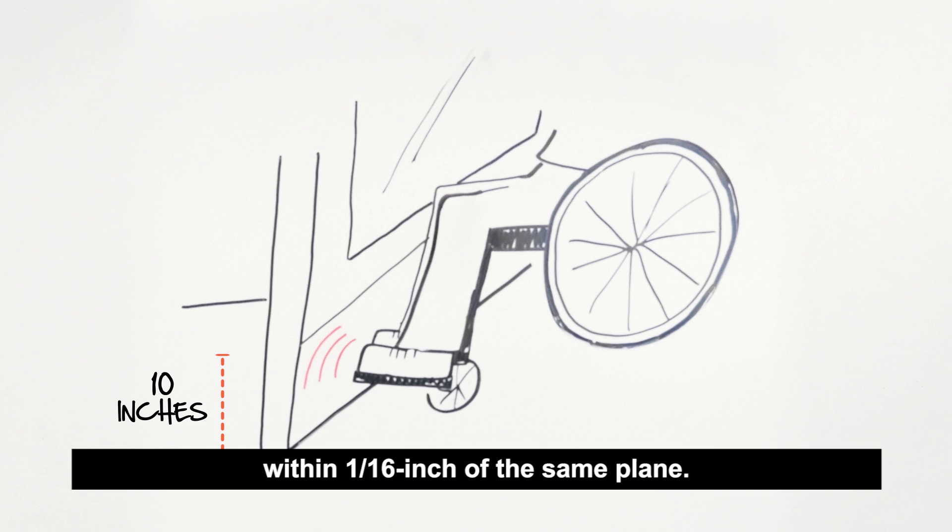Horizontal or vertical joints must be within 1/16th inch of the same plane. If a kick plate is added to extend the height of a narrow bottom rail, the cavity between the kick plate and the glass must be capped. Refer to the standards for exceptions related to sliding doors, some all glass doors, and doors that do not extend to within 10 inches of the floor or ground.